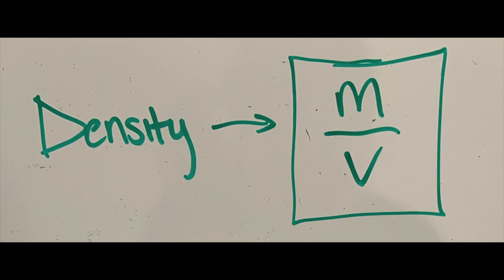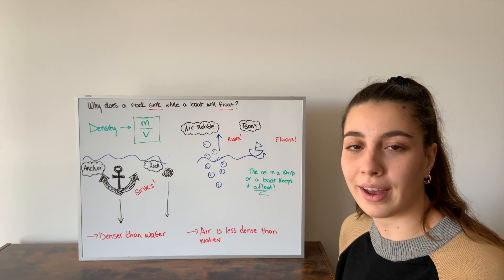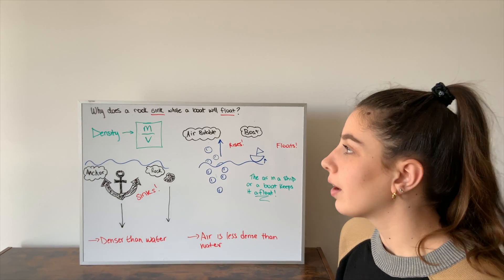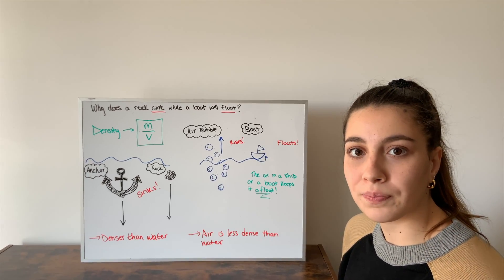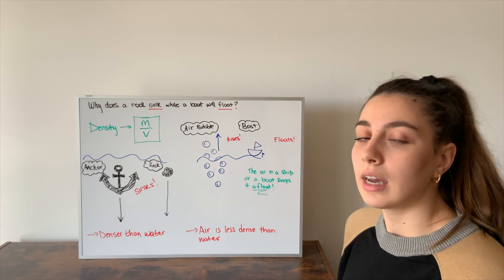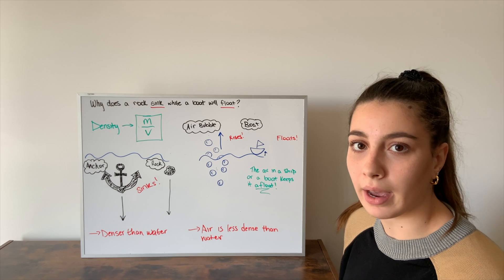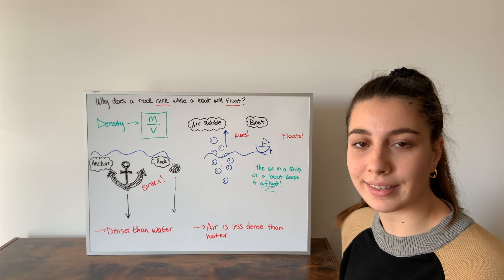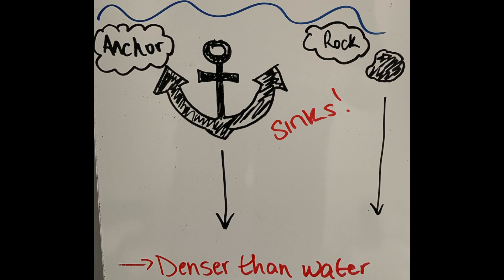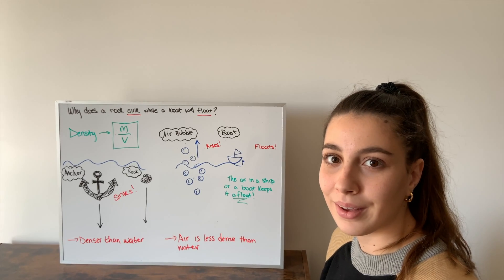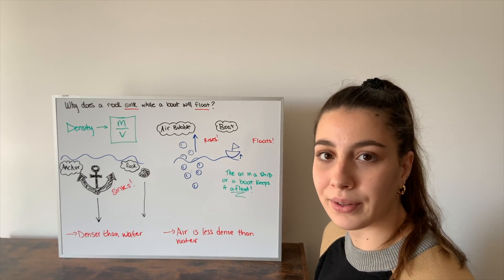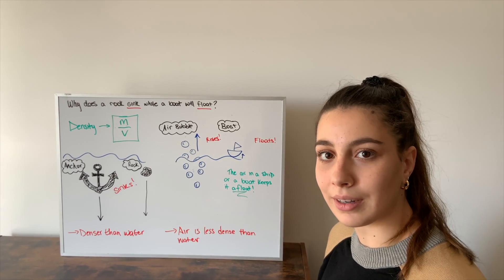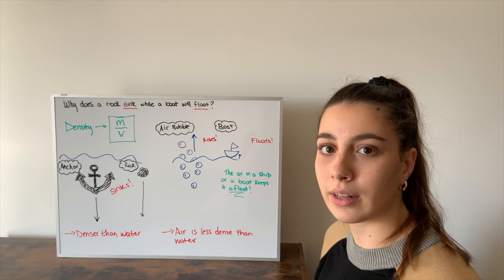The first section of the whiteboard we will be talking about is density. So let's go back to the question from the beginning of this video: why does a rock sink while a boat will float? Density is defined as an object's mass per unit volume, and can also be explained as how compact a material is. For example, an anchor is denser than water and so it will sink. Similarly, a rock is denser than water and so it will also sink.